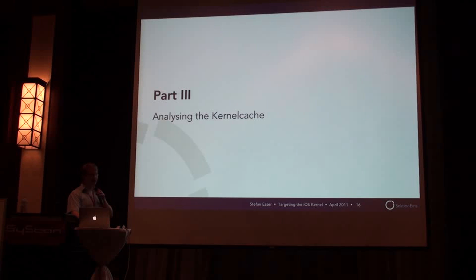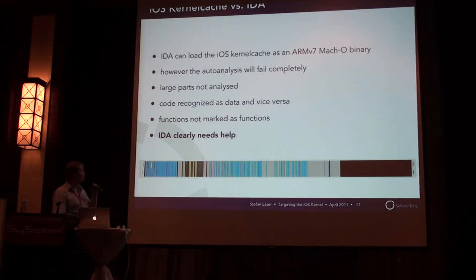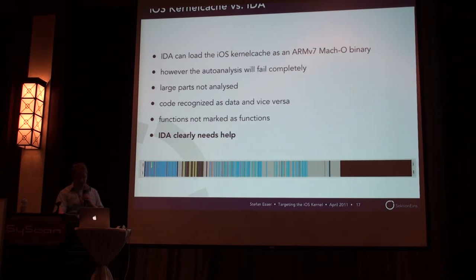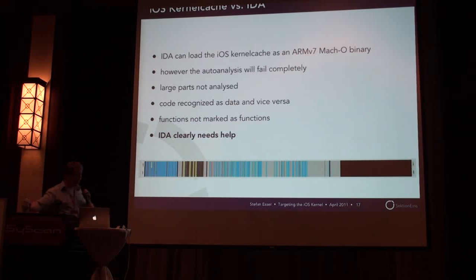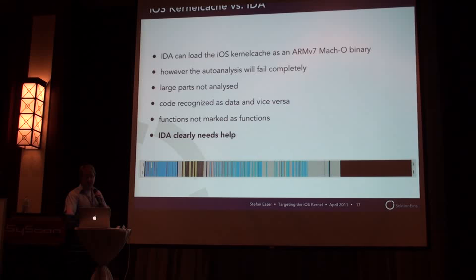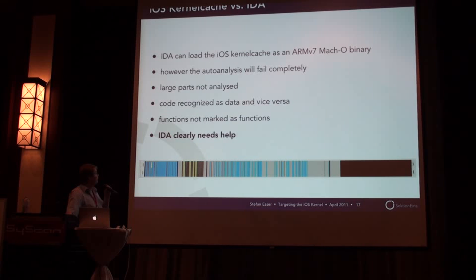Now you have extracted the binary — how can you analyze it? The first thing you will do is load it into IDA. IDA can load it because it's a normal ARM v7 binary, and it will start its auto-analysis. But when the auto-analysis is finished, you will see that IDA completely failed to analyze it. Normally the idle bar should be completely blue for a well-analyzed file, but there are a lot of missing things. There are red lines indicating code that was not in functions, and IDA found a lot of code that is actually data, and some data that is actually code. So IDA clearly needs your help.